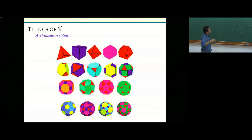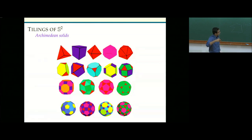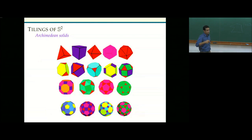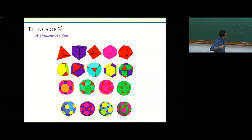Before going to the hyperbolic plane, let me talk about tilings of the sphere — the other classically known case. These correspond to polyhedra. First, there are the Platonic solids: the tetrahedron, cube, octahedron, dodecahedron, and icosahedron. These use only one type of polygon. But if you allow different polygons, there are more — some quite familiar, like the football shape.